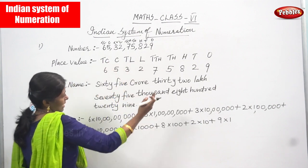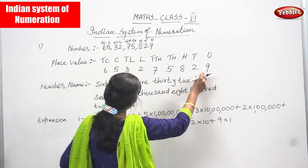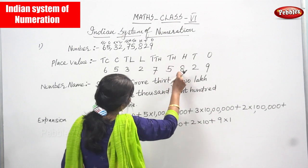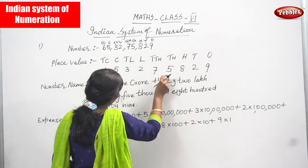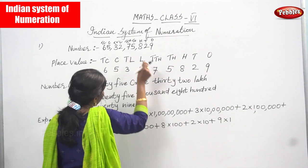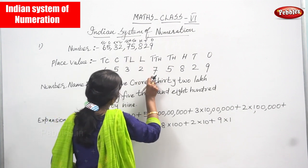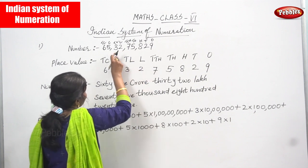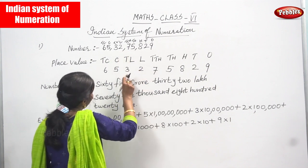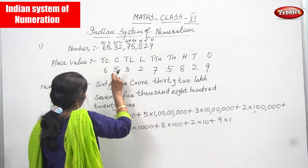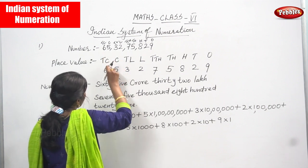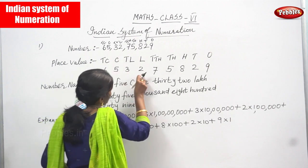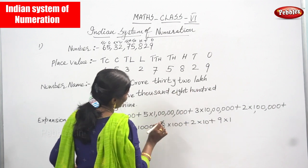I start from the right side. Tens place: 2 — two tens. Hundreds place: 8 — eight hundreds. Thousands place: 5 — five thousand. Ten thousands place: 7 — seventy thousand. Lakhs place: 2 — two lakhs. Ten lakhs place: 3 — thirty lakhs. Crore: 5 — five crores. Ten crore: 6 — sixty crores. That gives us sixty five crores thirty two lakhs seventy five thousand eight hundred and twenty nine.